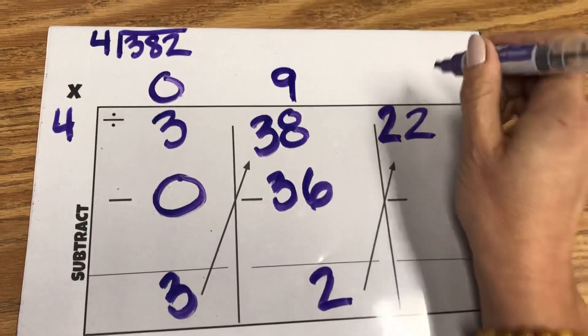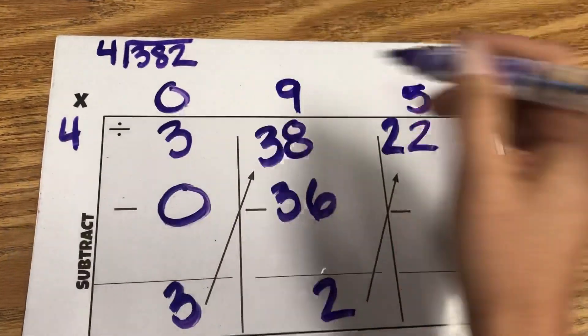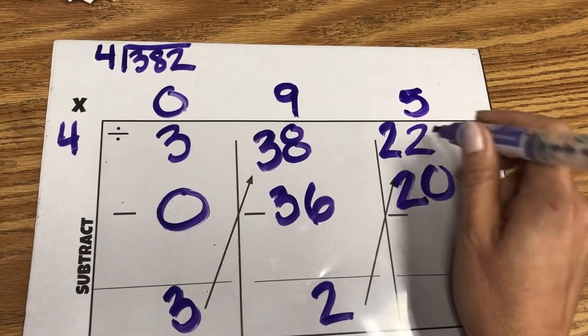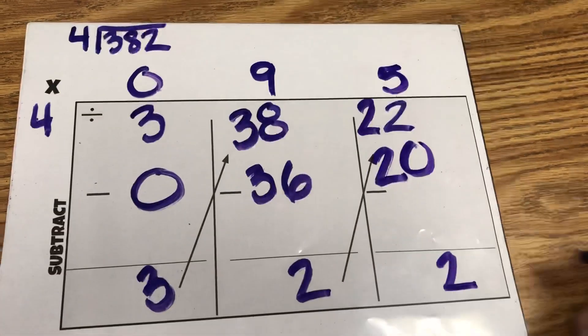4 goes into 22 five times. 4 times 5 is 20, and bring down the 2.